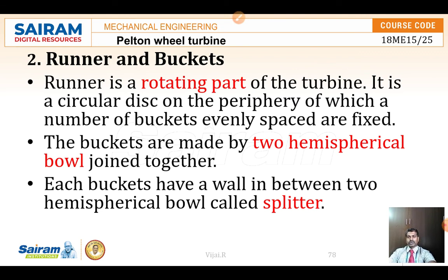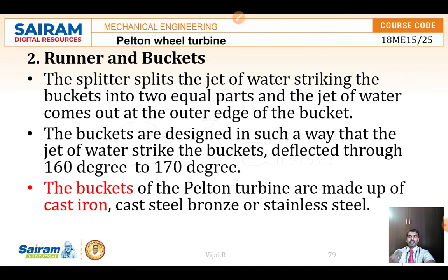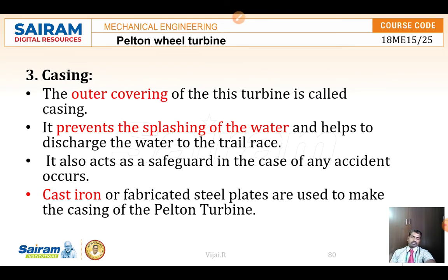The runner and buckets are the next part, where the water begins to act. The runner is a rotating part. The buckets are arranged in an evenly spaced manner on the periphery. Each bucket consists of two hemispherical bowls joined together, with a center dividing wall called a splitter. The jet of water through the penstock and nozzle hits on the center of the bucket. The buckets are made up of cast iron to withstand high pressure and vibrations.